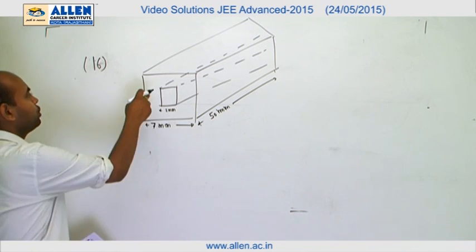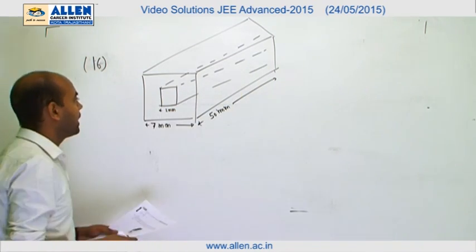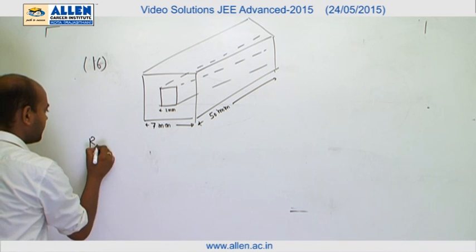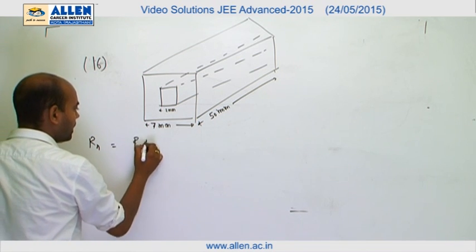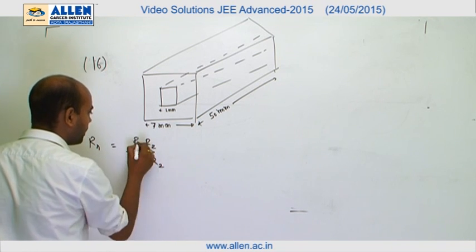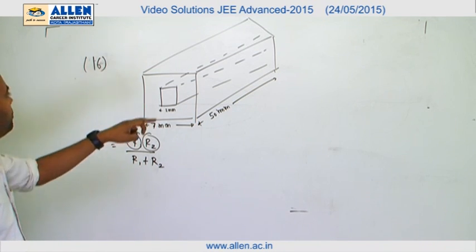These two resistances from this point to this point are in parallel. Obviously we can get the value of R net: R net equals R1 R2 divided by R1 plus R2. We have to find the value of R1 and R2 separately.